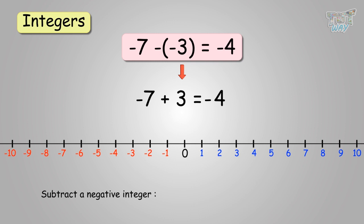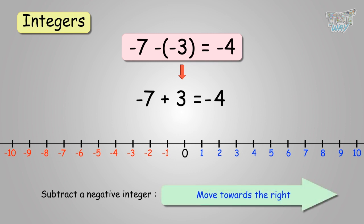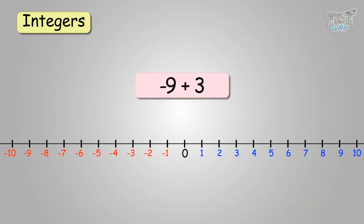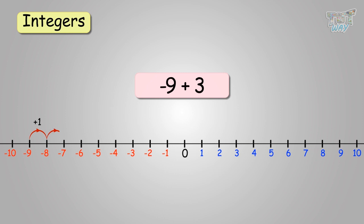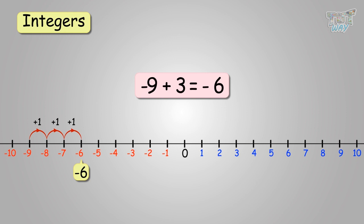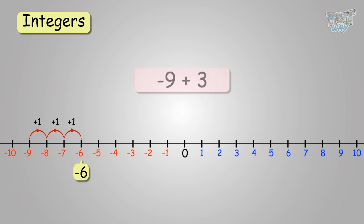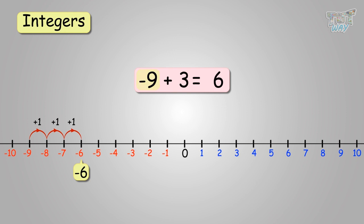When you subtract a negative number, you move towards the right. You can start at negative 7, then move 3 places towards the right to get negative 4. Next, we have to add 3 to negative 9. Whenever we have to add a positive integer, we move towards the right. So, start at negative 9 and then move 3 towards the right. We get negative 6 as the final answer. And remember, when you have to add two integers with different signs, find their difference, and the answer will have the sign of the bigger number. 9 minus 3 is 6. The bigger number is negative 9, so the answer will be negative 6.